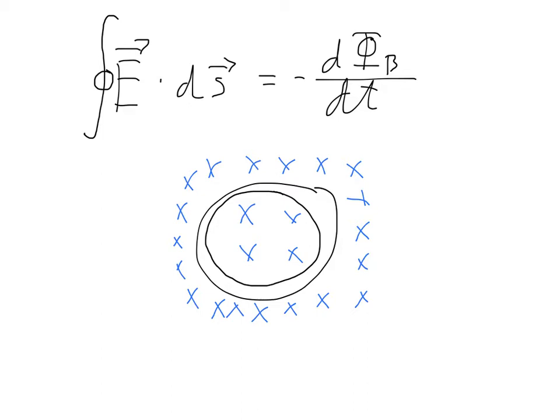You would have some sort of a current going through, and so there would be some sort of a bit of electric field at each little segment of this loop. Every little point would have some sort of electric field being produced.